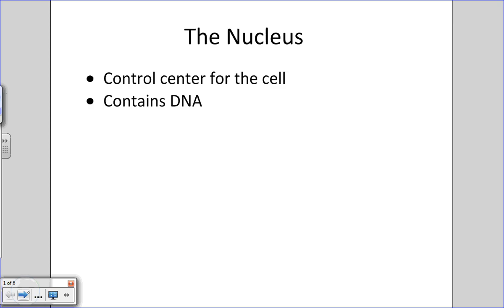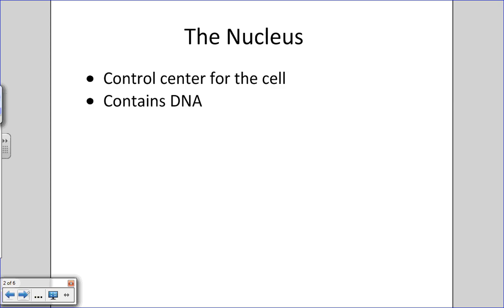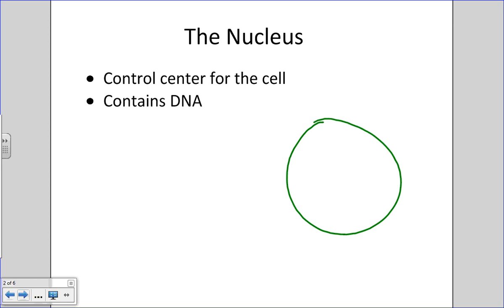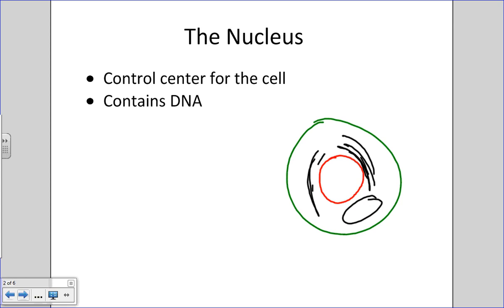The nucleus is the largest organelle within a cell and is also considered the control center for the cell. If we have a cell, you've got your plasma membrane, then you've got a nucleus, and then all your other organelles are around the nucleus in one form or another — whether it's the endoplasmic reticulum, mitochondria, and so on.